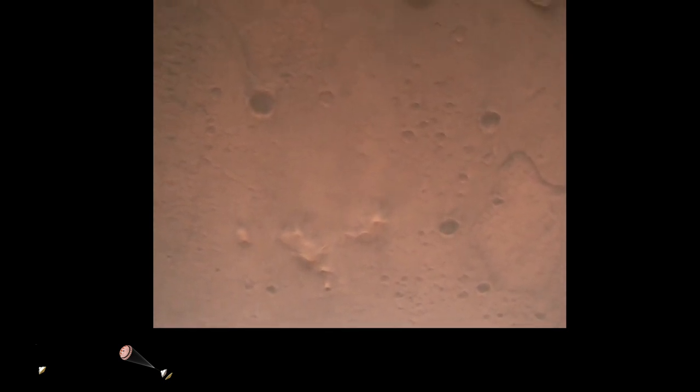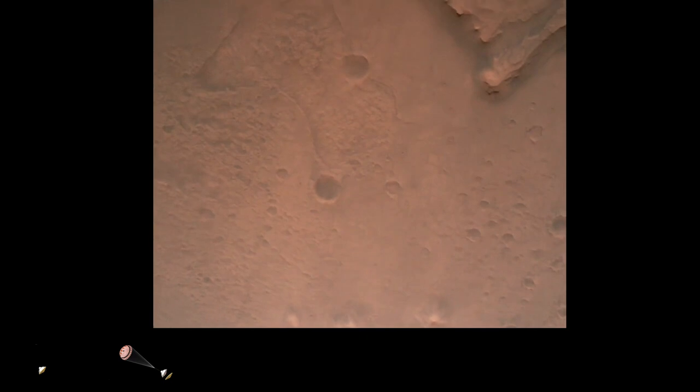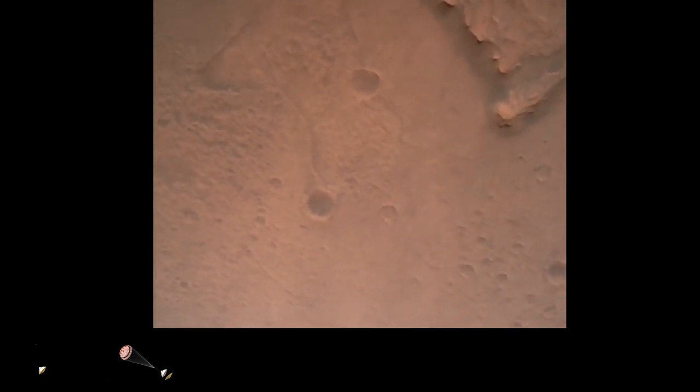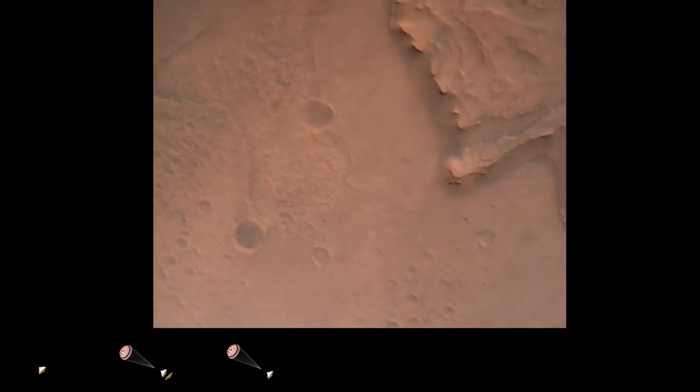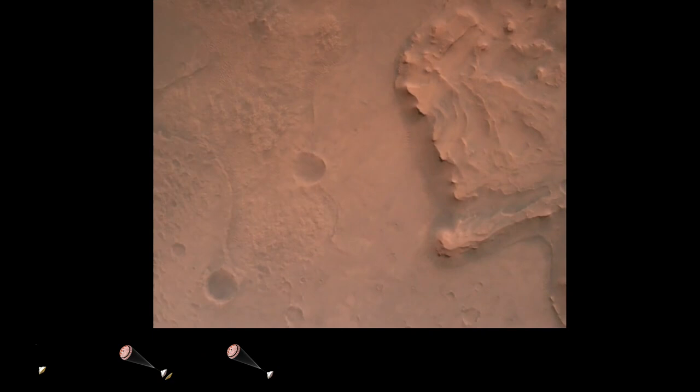Nav filter converged. Velocity solution 3.3 meters per second. Altitude 7.4 kilometers. Now has radar lock on the ground. Current velocity is about 100 meters per second, 6.6 kilometers above the surface.